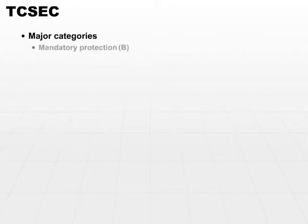Moving on into the next step is Category B. Category B is mandatory protection, and that is comprised of three subcategories: B1, B2, and B3, in increasing orders of protection.